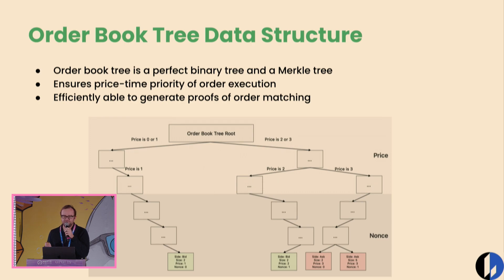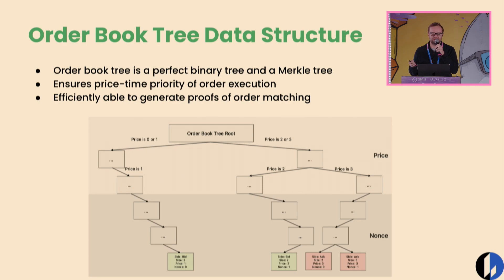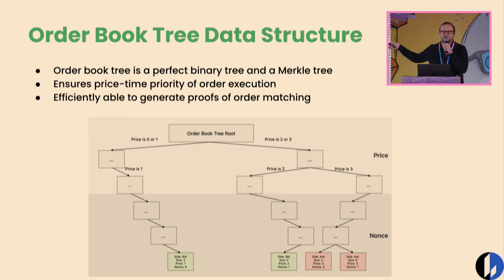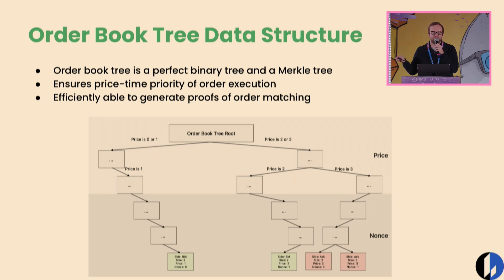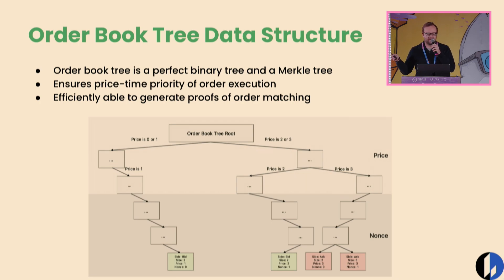One of the things we introduced as part of this is a new type of data structure: an order book tree data structure. It's a tree that stores the bids and offers in the order book in a way that inherits the properties you want from a perfect binary tree and a Merkle tree. It ensures proper price-time priority of order execution and, because of the Merkle tree aspects, is able to efficiently generate proofs of the order matching.